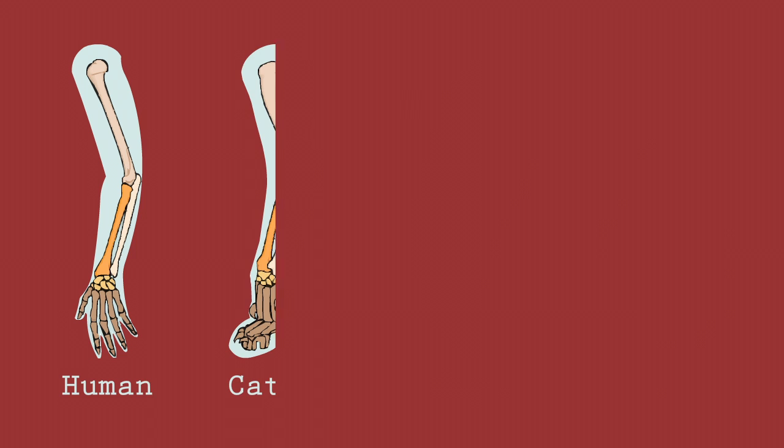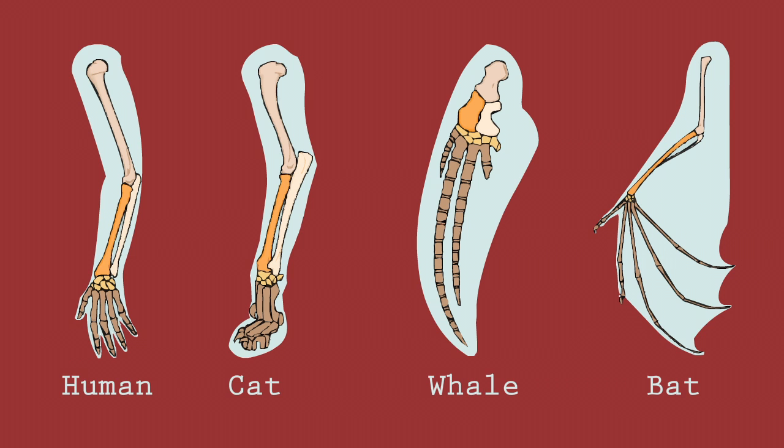Anatomical evidence also supports evolution, one example being the preserved bone structure in the arms, wings, and flippers of all vertebrates.